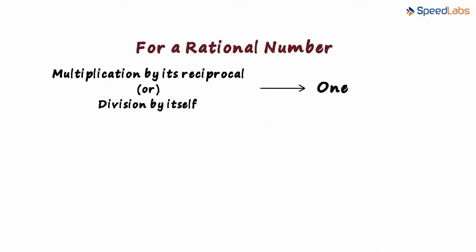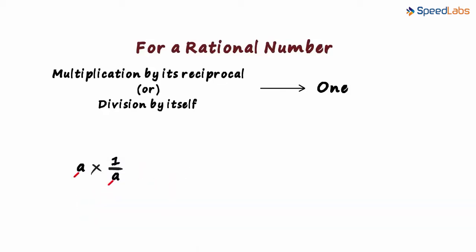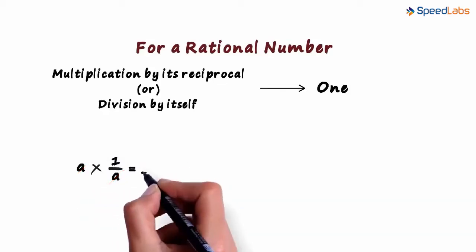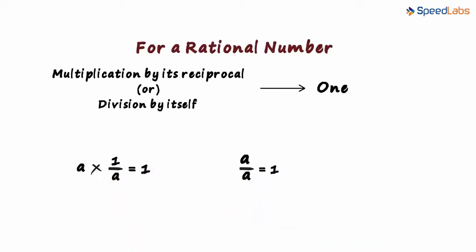Assume we have a rational number A. Multiplying it with its reciprocal means multiplying it with 1 by A. A cancels out and we get a 1. And if we divide A by itself, we get a 1. Remember, multiplication by its reciprocal and division by itself will always result in a 1.